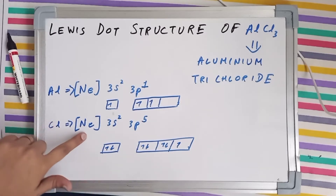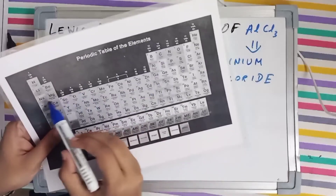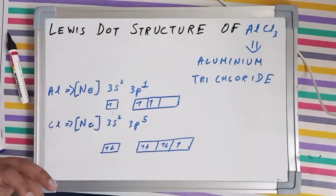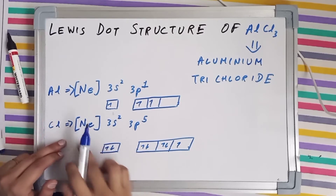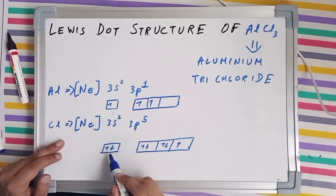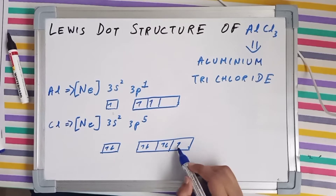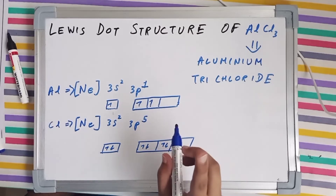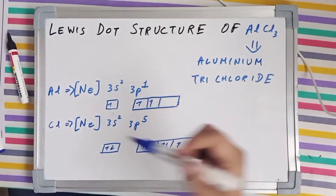Now talking about chlorine — its electronic configuration is the inert configuration of neon, and 3s² and 3p⁵. Both aluminium and chlorine are third period elements. 3s has two electrons, whereas 3p has five electrons across three orbitals, giving a single unpaired electron. So chlorine will make just a single covalent bond.